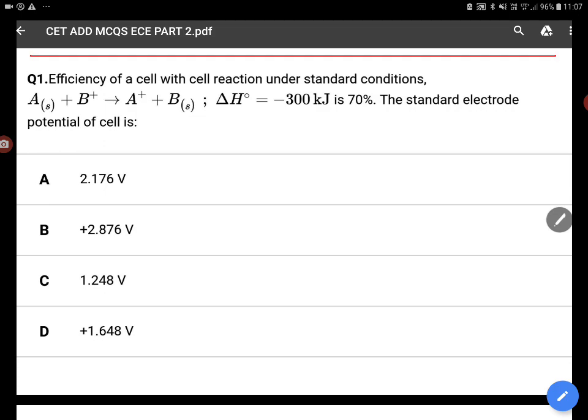Question number one: Efficiency of a cell with cell reaction under standard conditions. A(s) + B⁺ → A⁺ + B(s). ΔH° = -300 kJ, efficiency is 70%. The standard electrode potential of the cell is being asked.